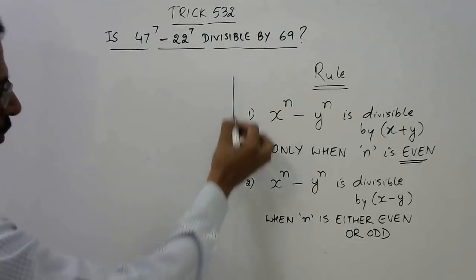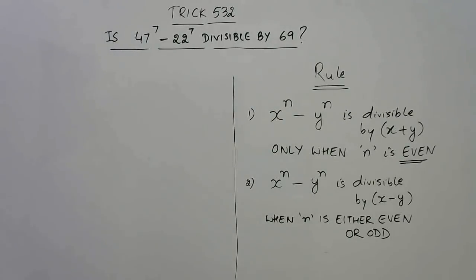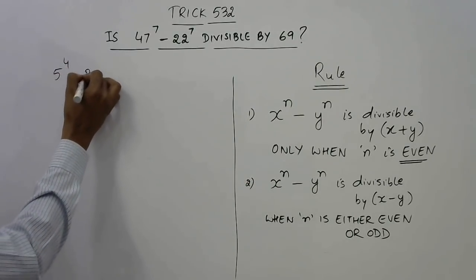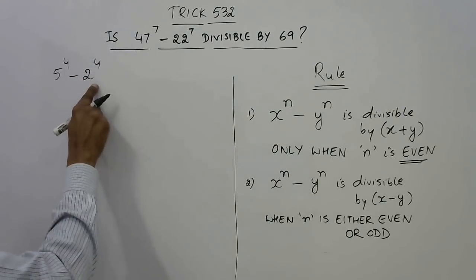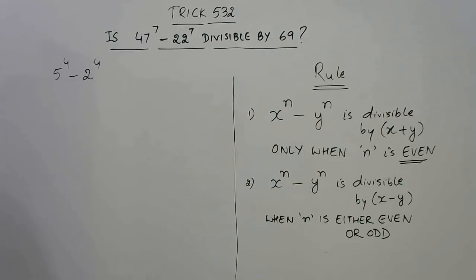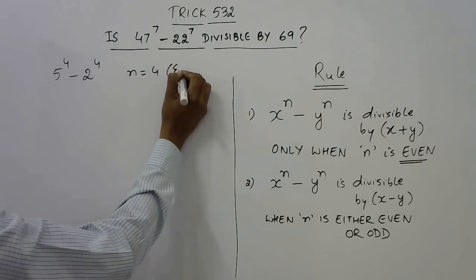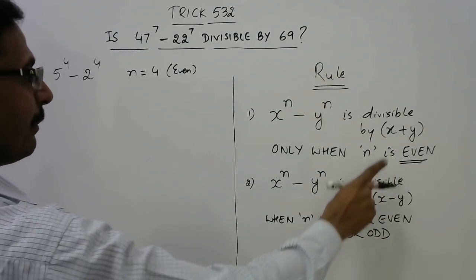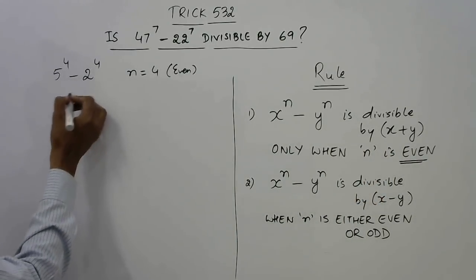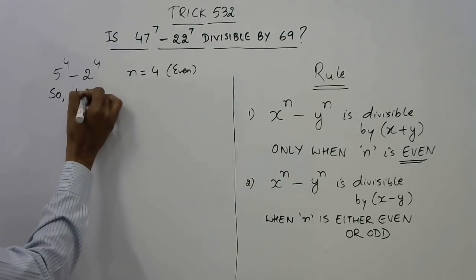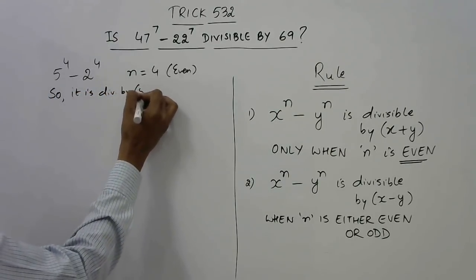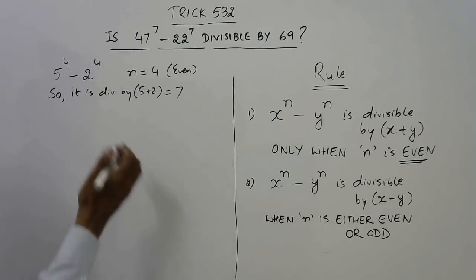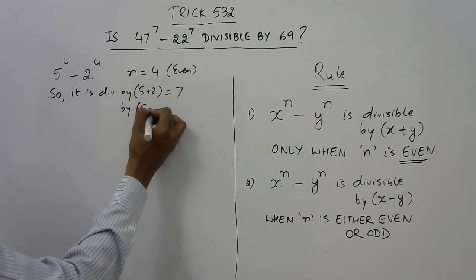Now these are the two rules which I want to discuss in this video. So let's take some examples to find out how this rule can be applied. I will take a very simple example of 5 raised to power 4 minus 2 raised to power 4. Now see, x is 5, y is 2, and n is 4. Here n is 4 which is even. So when the power is even, the number is divisible by x plus y, which is 7. And it is also divisible by 5 minus 2 which is 3.